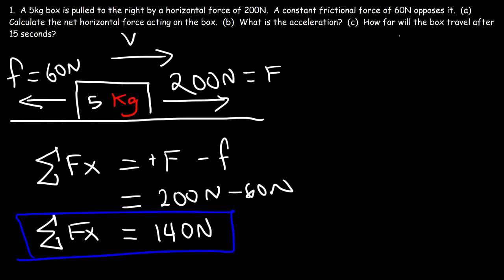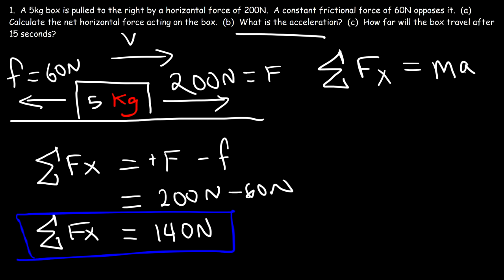Now what about part B? How can we calculate the acceleration acting on this box? Newton's second law states that the net force, be it in the x-direction or in the y-direction, is equal to ma — mass times acceleration. It also states that if the net force is in the x-direction, the acceleration has to be in the x-direction. The acceleration and force vectors will always be in the same direction.